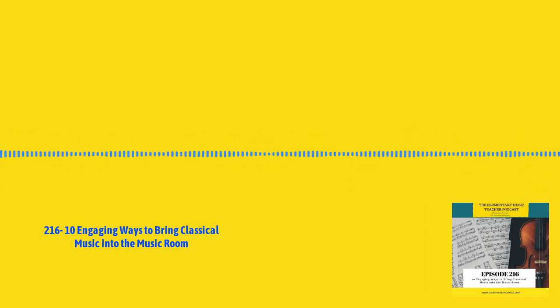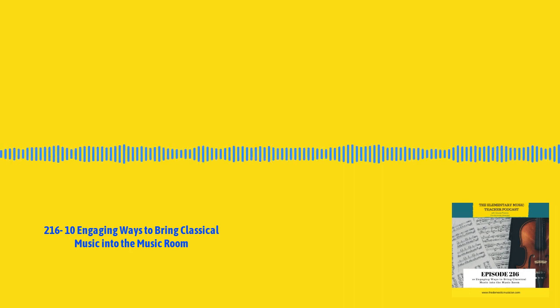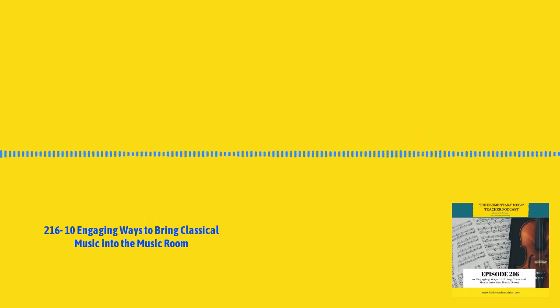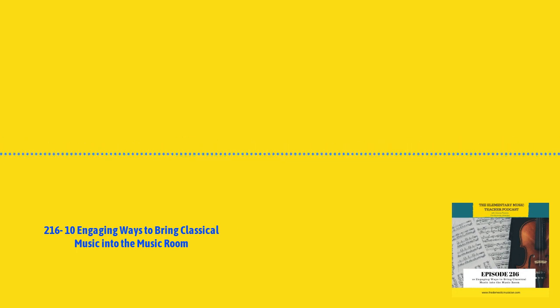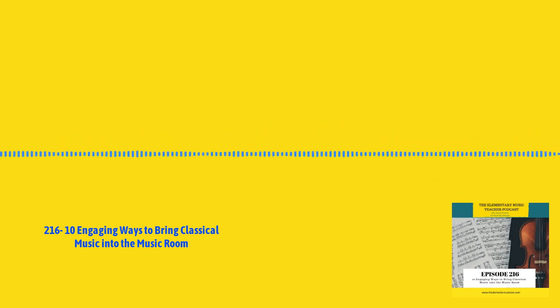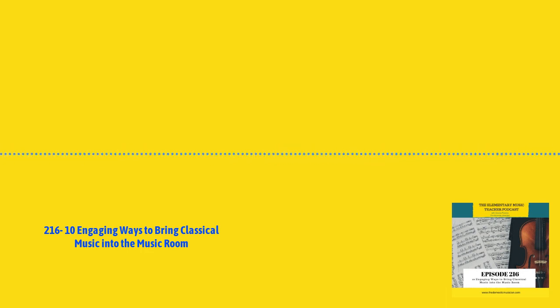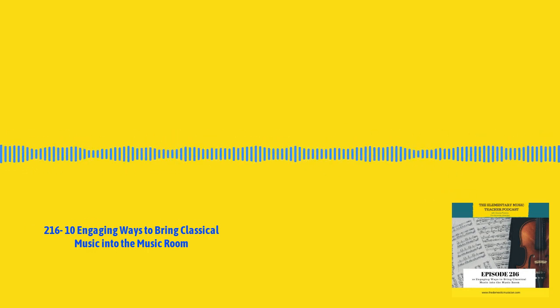Number nine: play an instrument of the orchestra game. There are a lot of different games students can play to learn about and retain knowledge of the instruments of the orchestra. One of my favorites is called Instrument Four Corners — you have an instrument family in each corner: woodwind, brass, strings, and percussion. You say an instrument like clarinet and students need to walk to the corner where that family is. Students can first listen to the different instrument families, then identify instruments within each family, and then play the game. So number nine: play an instrument of the orchestra game.